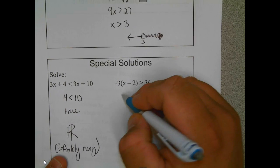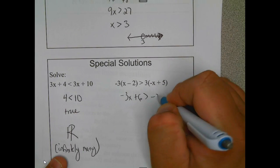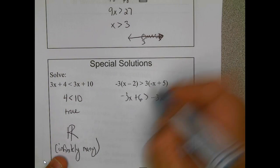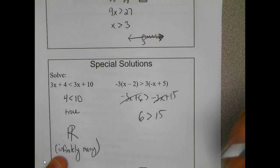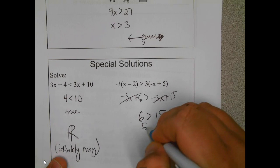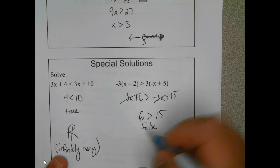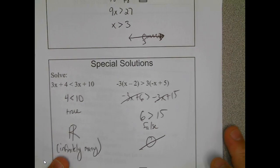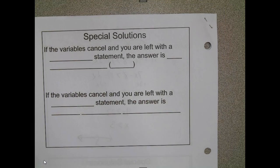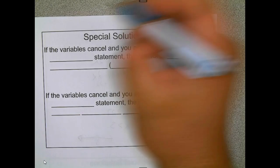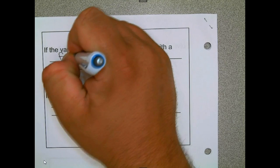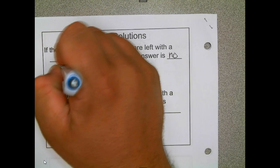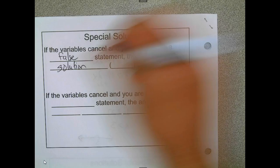If I distribute here, and then distribute here, and then these two cross out, I end up with 6 is greater than 15. Well, that is false, and so the solution to this inequality is no solution. So if the variables cancel and you are left with a false statement, the answer is no solution, and there's the symbol.